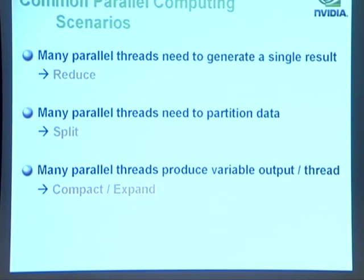In parallel computing there are a number of scenarios that come up a lot. Many parallel threads may need to generate a single result from their collective data — that's known as reduce. You might have many parallel threads that need to partition their data on a given criterion — that's known as split, for example all values less than some pivot point as in quicksort. Or you might have many parallel threads that produce a variable amount of output per thread — this is known as stream compaction, or compact or expand.